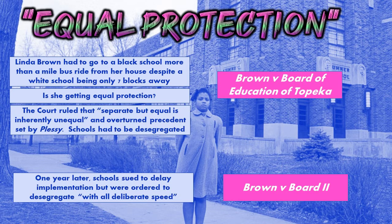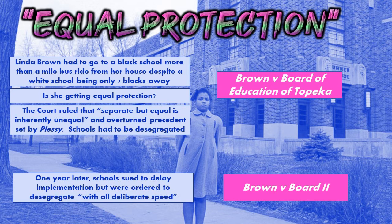A year later, we have Brown versus Board of Education 2. The schools were trying to delay, and for the states, that is a big change — costs a lot of money, hard to do very quickly. But the court ordered them in Brown v. Board 2 to desegregate with all deliberate speed. That is the court doubling down on their decision and ordering the states to do this. Implementation happened slowly, but Brown versus Board of Education desegregated the schools, and Brown versus Board 2 ordered it be done as quickly as possible.